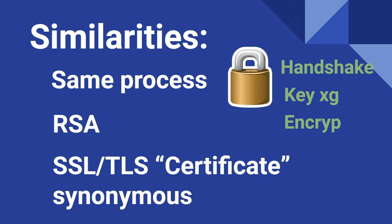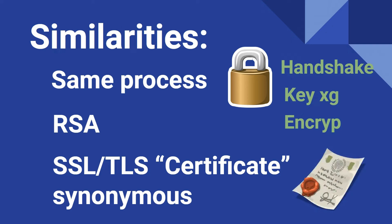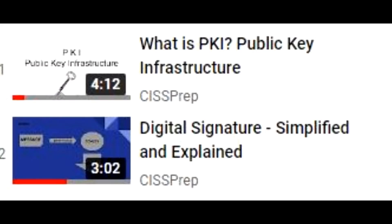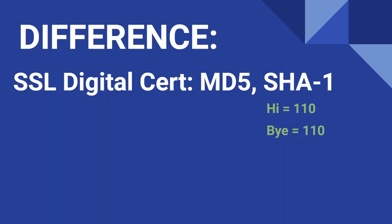Now let's look at some differences. One of the main differences can be the use of hashing functions. SSL can use older hashing functions such as MD5 or SHA-1, which have been shown to be deprecated due to the ability to produce something called a collision. A collision is when the digest, or digital representation, is shown to be the same when there are different inputs. If you'd like more information on hashing functions, we have a few videos on hashing, digital signatures, or digital certificates that cover this with some nice visuals.